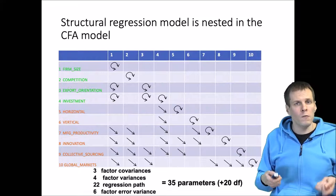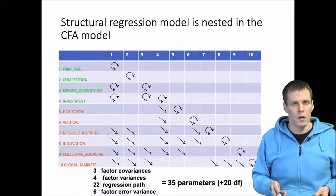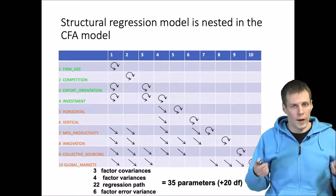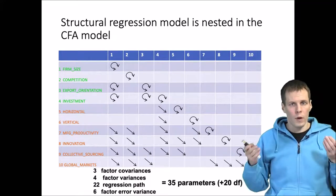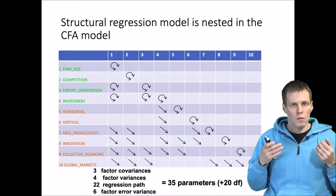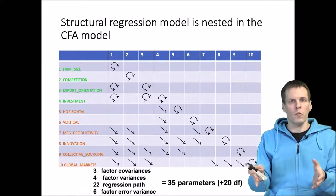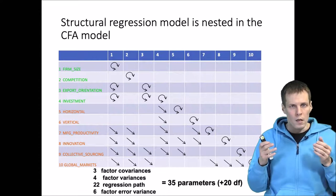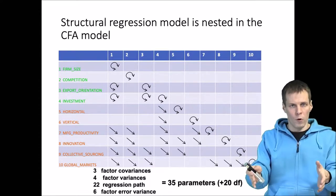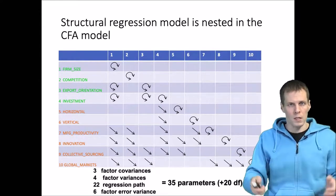The degrees of freedom difference between the confirmatory factor analysis model and the theoretical model is 20. We took correlations away and we put regression coefficients back. The difference in the number of correlations that we took away minus the number of coefficients that we put there is 20.